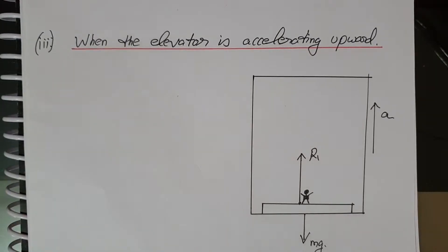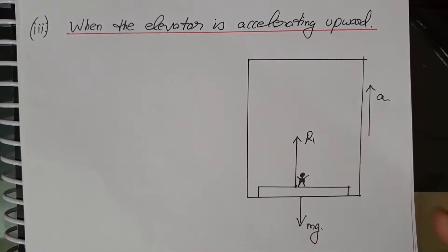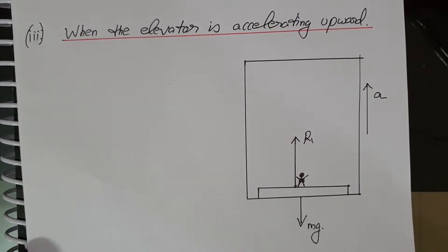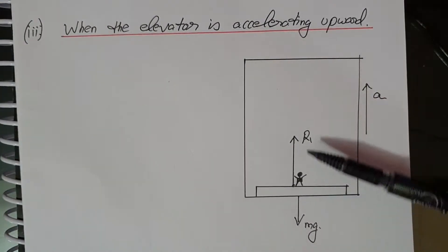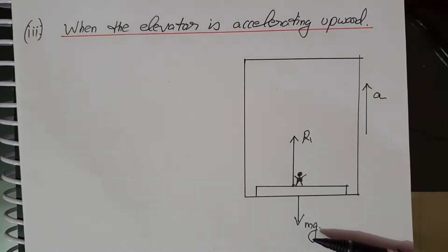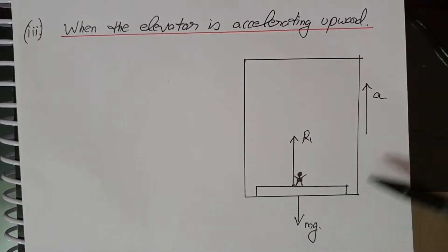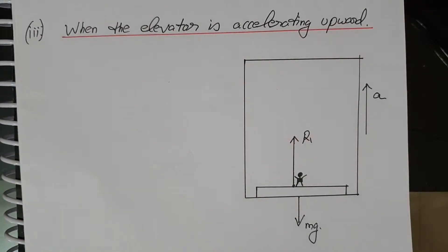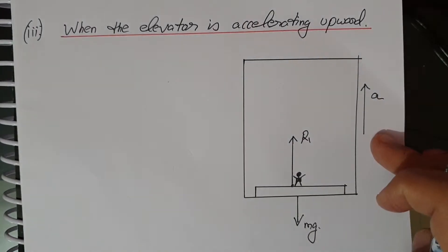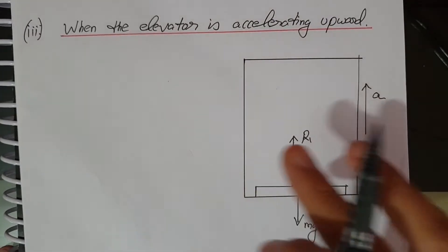When the elevator is accelerating upward, the apparent weight R will be different — I have taken it as R1. The forces acting on the person are R1 vertically upward and mg downward. Since the lift is accelerating upward, R1 is more than mg, meaning there is a net upward force. The acceleration is A.